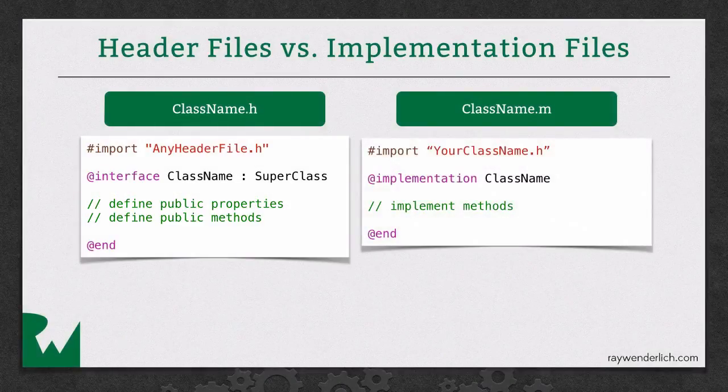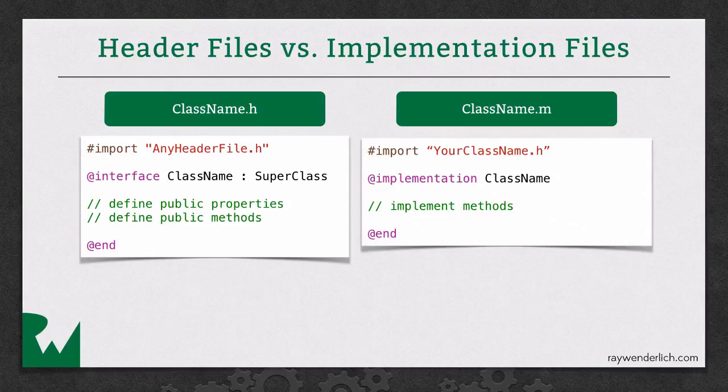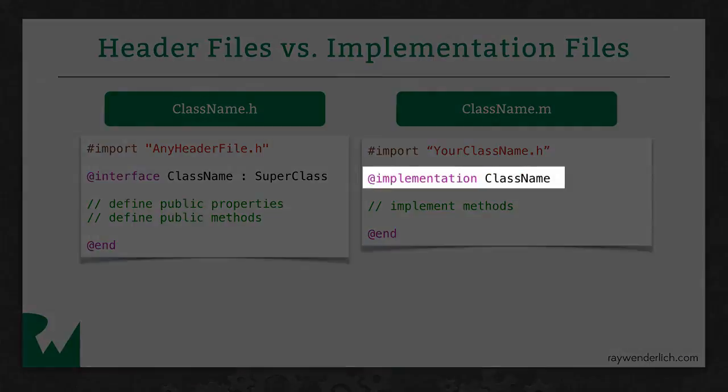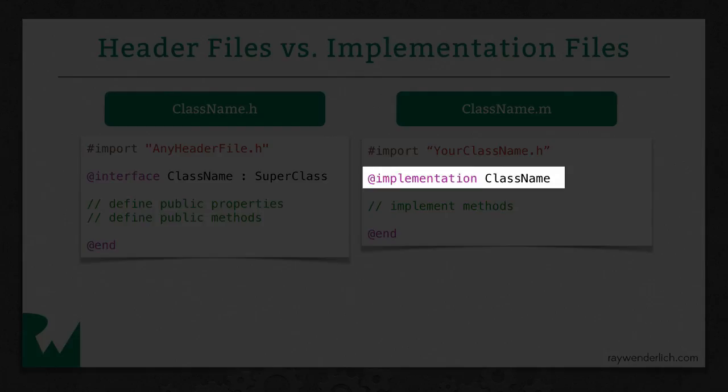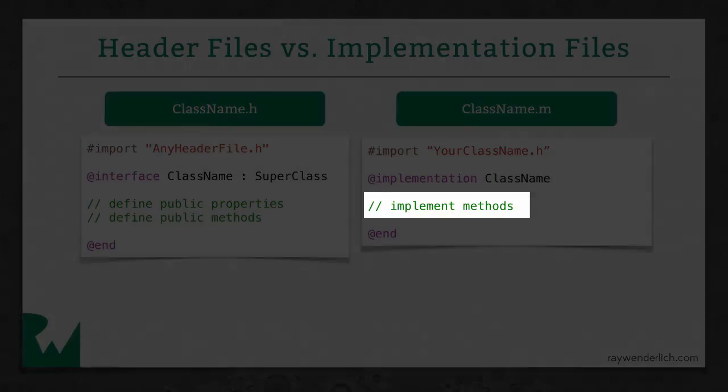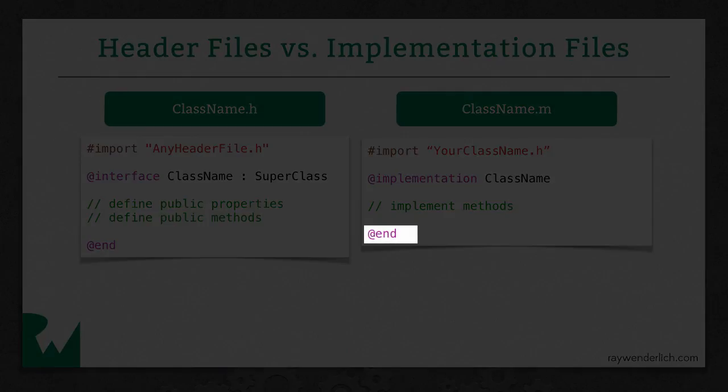Now, let's look at the .m. So the first thing you typically do is you import your header file, and you might import some other headers that you need to know as well at this point. Then you have @implementation, and this is saying now you're implementing this class, and you give your class name. And then you're going to put all the implementation of your methods here. When you're done, you put @end at the end of the file.